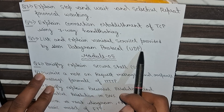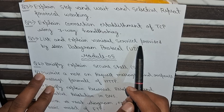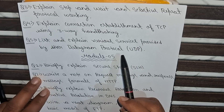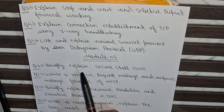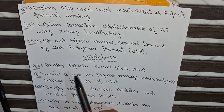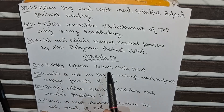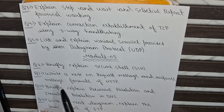These are the 5 questions from Module 4. Now moving to Module 5, our last module. The first question is: Briefly explain SSH (Secure Shell). The second question is: Write a note on request message and response message formats of HTTP.